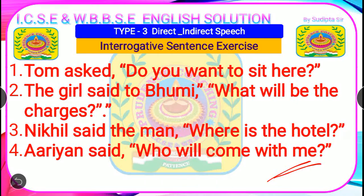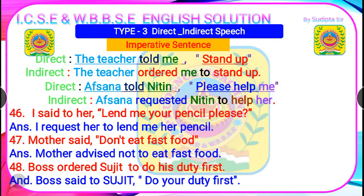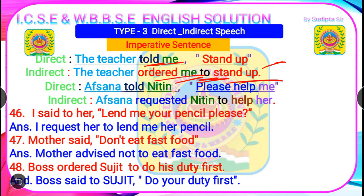Now, the imperative sentence. An imperative sentence addresses three kinds of things: order, request, or advice. Example: 'The teacher told me, stand up.' Teachers generally give orders, so 'told' → 'ordered': 'The teacher ordered me.' We use the linker 'to.' Final answer: 'The teacher ordered me to stand up.' Next: 'Afsana told Nithin, please help me.' 'Please' indicates a request, so: 'Afsana requested Nithin to help her.'